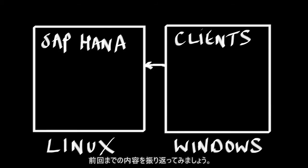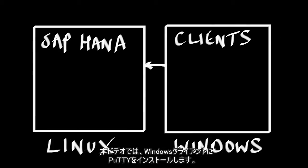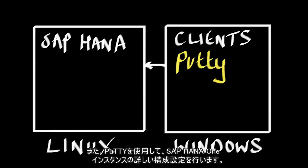Let's review what we've got in our project. We've got two machines. One is a Linux box that has SAP HANA 1 already configured, and another is a Windows box which is going to be used to install our various clients. In this video, we're going to install PuTTY on our Windows client, then use PuTTY to access and do further configuration of our SAP HANA 1 instance.